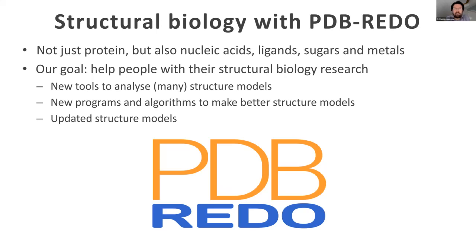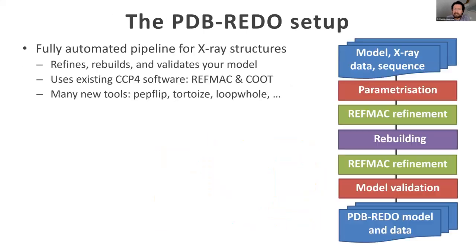We also try to help people by providing updated structure models. The PDB Redo setup is a fully automated pipeline for x-ray structures that refines, rebuilds, and validates your model. You provide your current model, your x-ray data, your sequence, and possibly also restraints for new ligands, and it goes through steps like refinement, rebuilding, and lots of validation. Out comes a new model that is hopefully better, along with descriptive information, new maps, validation scores, and structural analysis. This pipeline works with CCP4 software — most importantly REFMAC and Coot — but also many tools we've written like PepFlip, Tortoise, and Loophole.